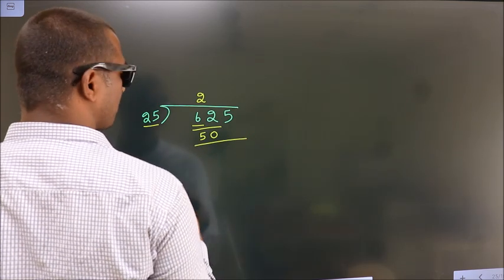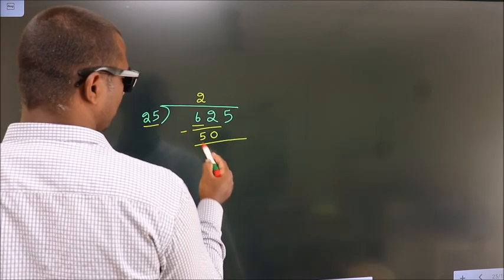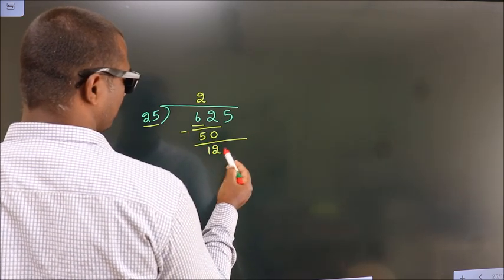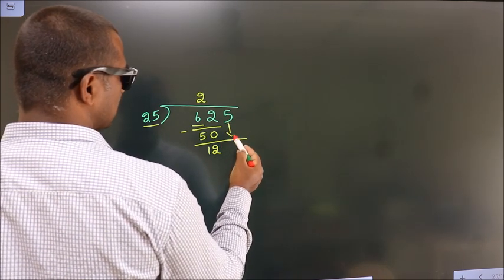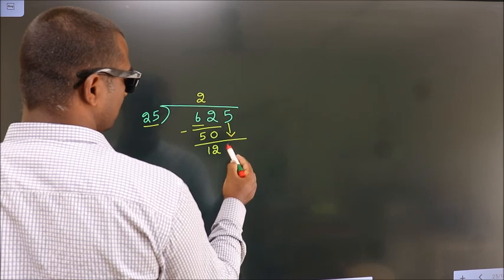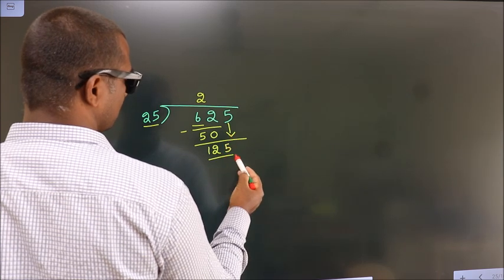Now we subtract. We get 12. After this, bring down the next number. So 5 down. So 125.